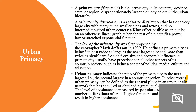When we talk of urban primacy, we first need to define what a primate city is. Primate simply means the first rank. So primate city distribution is a rank-size distribution, and the law of the primate city was first given by Mark Jefferson in 1939. Urban primacy indicates the ratio of the primate city.